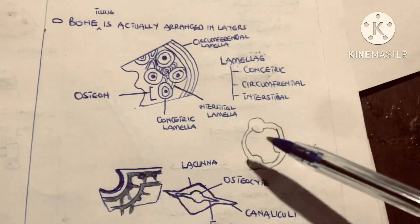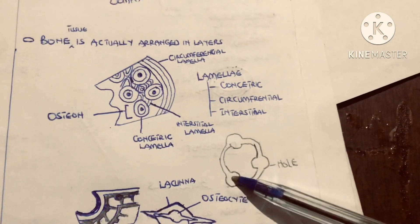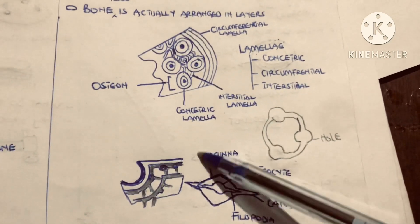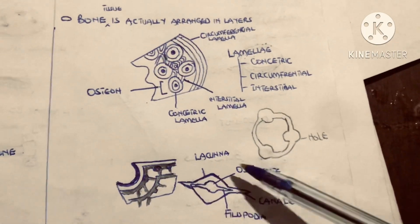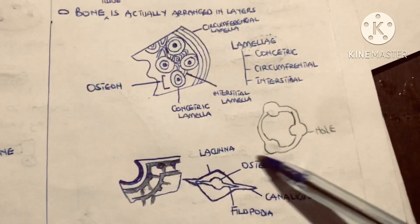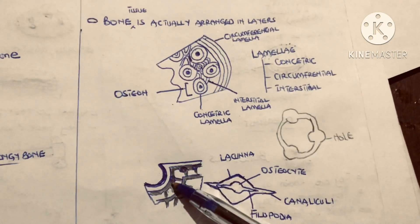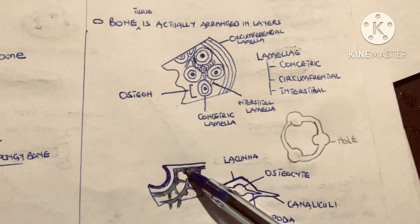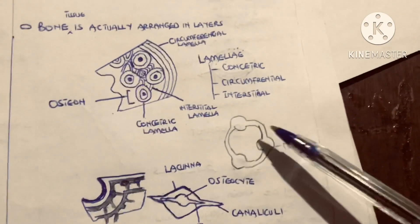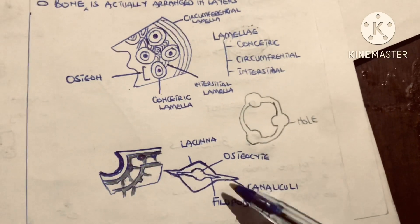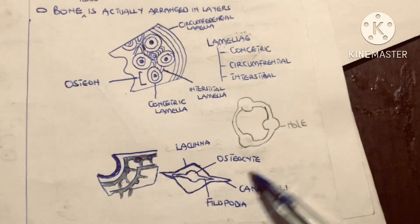When you look at the concentric lamellae, it is not totally solid — there are holes called the lacunae. These lacunae house the mature bone cells called osteocytes. The blue things here represent the osteocytes. But the lacunae are not totally circular — they have extensions which we call the canaliculi.